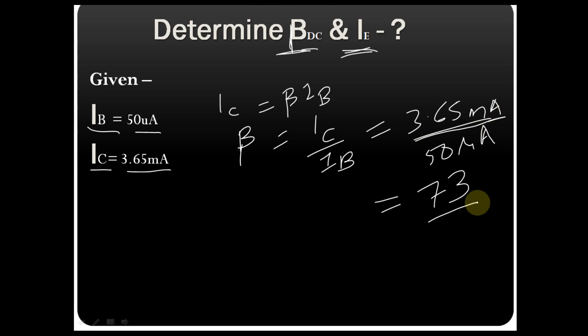Now you have got beta DC equals 73. Let us find the value of IE. You know the transistor expression: IE equals the collector current plus the base current. This is the formula used to calculate IE.